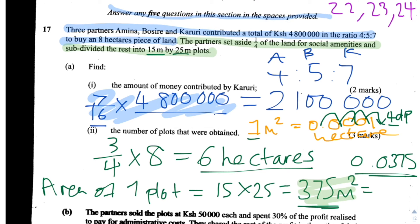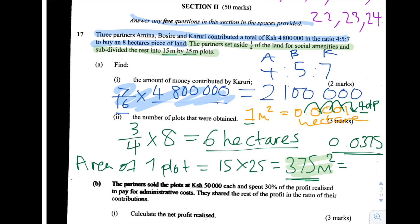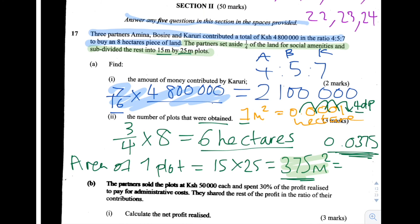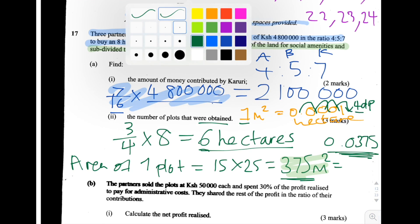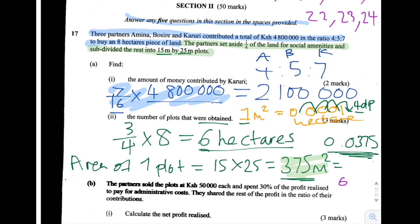To find out how many plots we ended up with, we do 6 divided by 0.0375. You can work that out on your calculator as well. That comes to 160, so the number of plots obtained is 160.